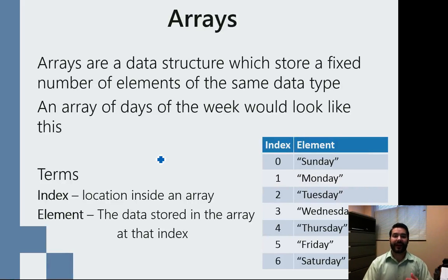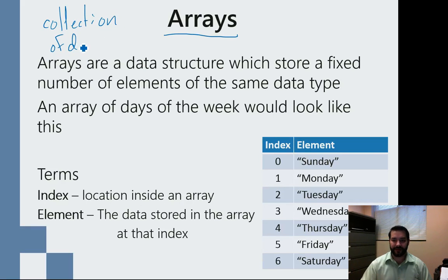So the last kind of data type we can handle isn't actually a data type at all. It's actually something called an array. And the reason why I said it's not actually a data type is because it's a collection of a data type.